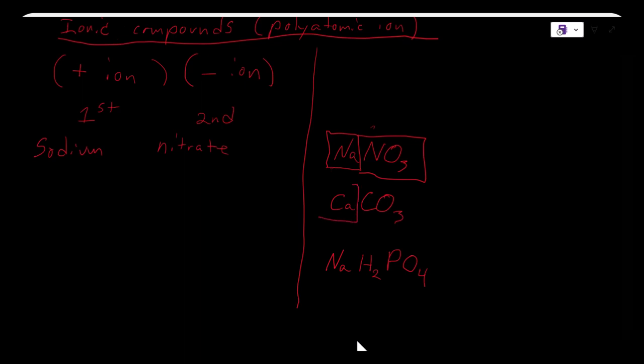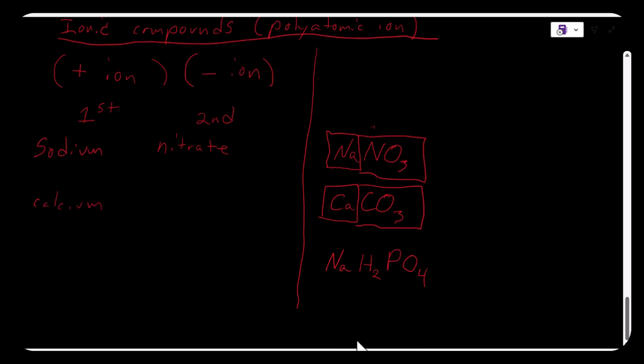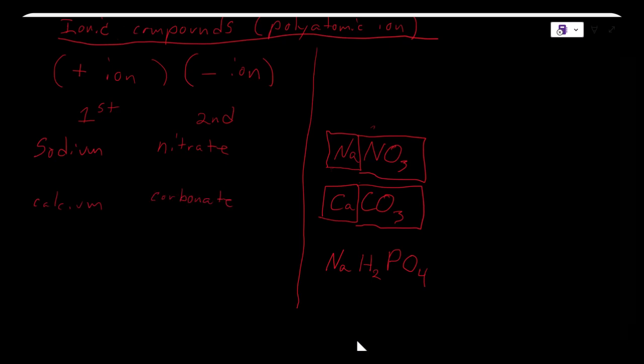We can break this up into two parts as well. The positive ion would come from the metal calcium, so we write calcium. The negative ion is carbonate. Going below this, we can break this up into two parts. The sodium ion comes from the metal sodium. The negative ion comes from dihydrogen phosphate.